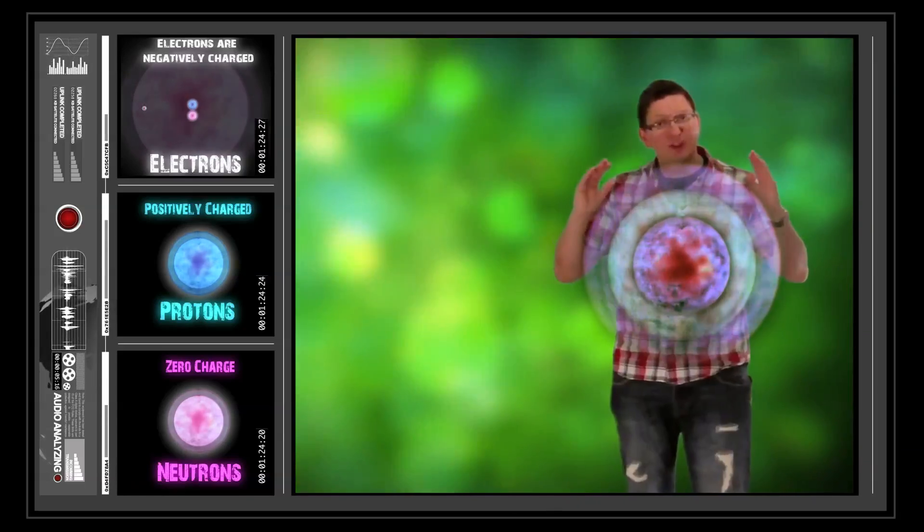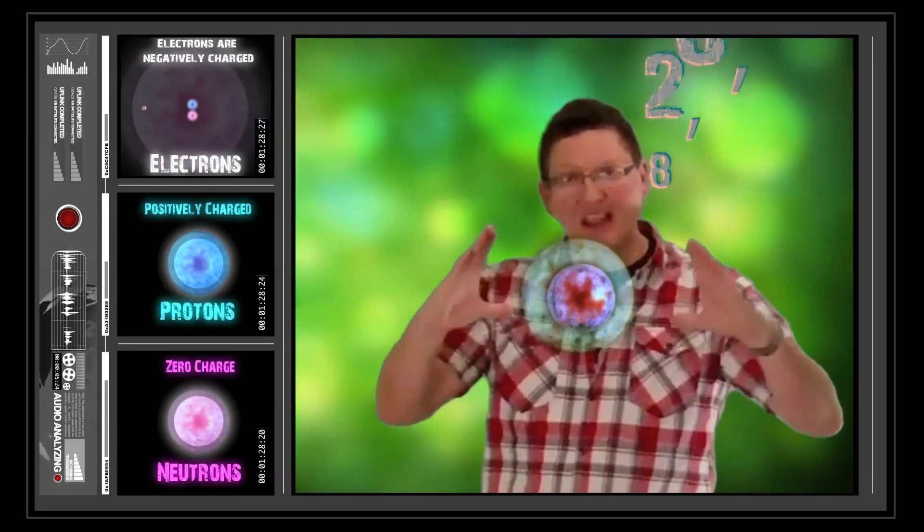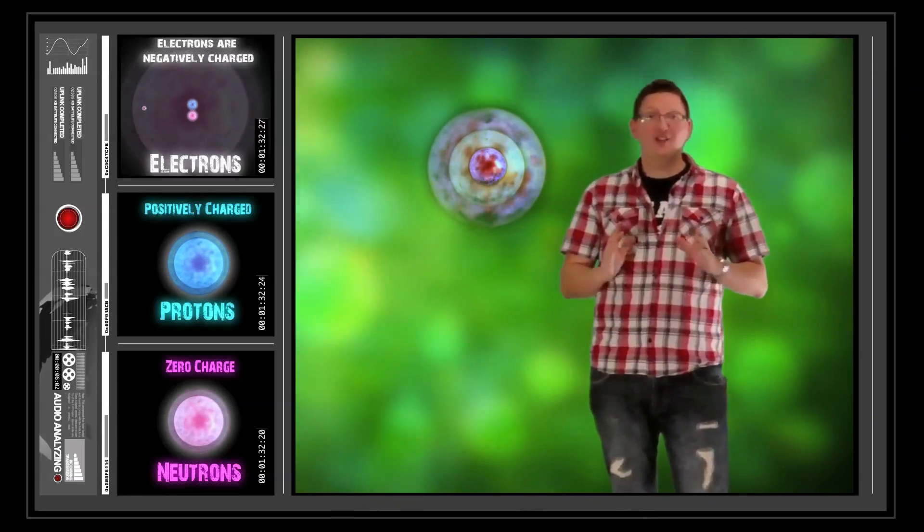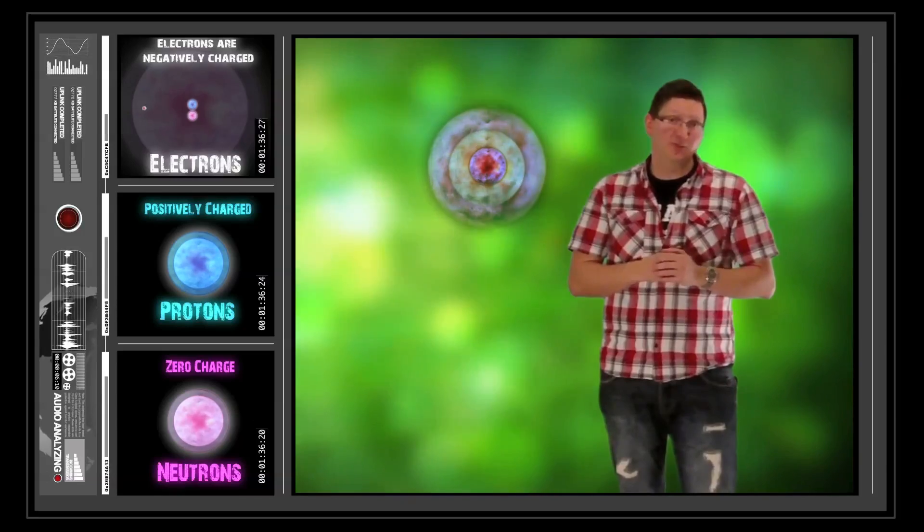And in the third shell, we'll stop there I think, we can have another 8 electrons. So it goes 2, 8, 8. Now the number of electrons in the shell is actually defined by the number of protons in the atom.